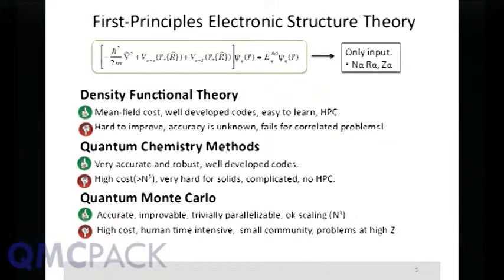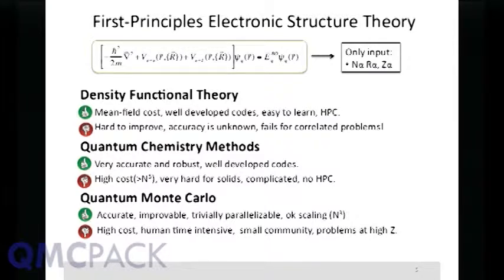There are many methods in the area of first-principles electronic structure theory. Basically, the entire goal is to find better approximations to the solution of the electronic Schrödinger equation. First principles means that the only input we need in principle is just the positions, charges, and number of ions — everything else is completely determined by theory. In practice, depending on the method, this is the goal. We don't use any form of experimental information.